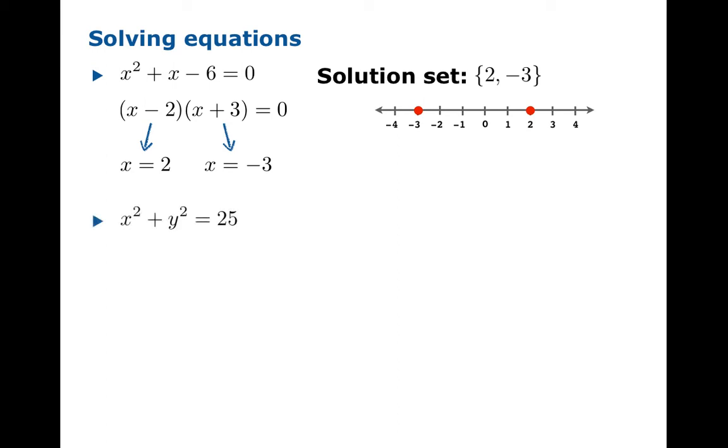You could have an equation in two variables. A solution looks a little different in this case because now it's not just a single number, but a pair of numbers. So 5, 0, and these other examples, they're all solutions to the equation. Actually, there are only four of many. In fact, infinitely many. There are infinitely many pairs of numbers that will work.